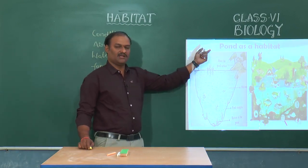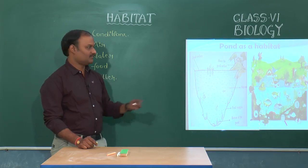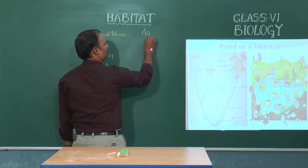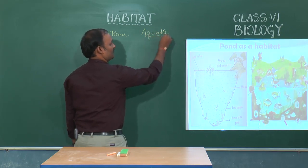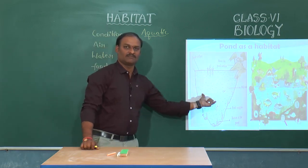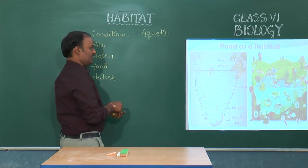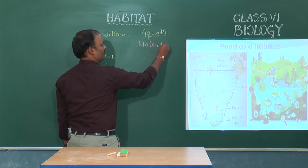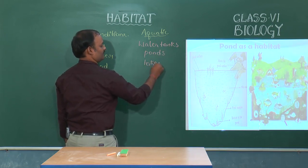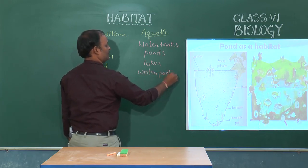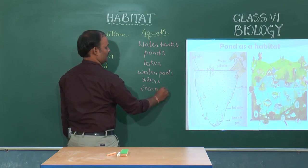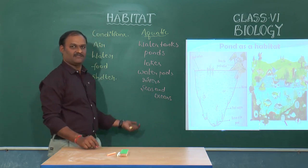Let us discuss a pond as a habitat. A pond is a place where there is enough water, and these habitats are known as aquatic habitats. Aquatic habitats are places where there is water. The different types of aquatic habitats are water tanks, ponds, lakes, water pools, rivers, seas, and oceans.